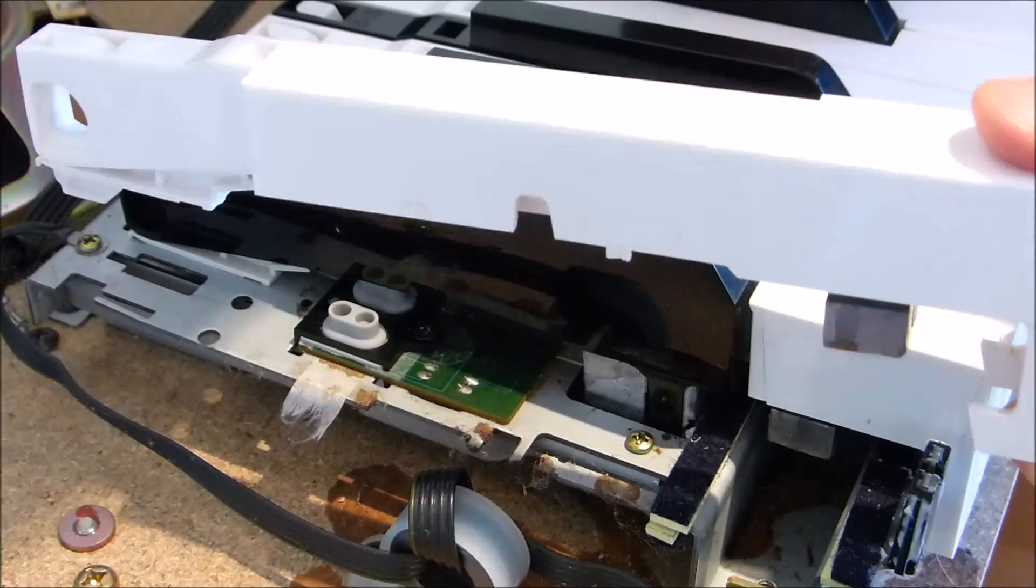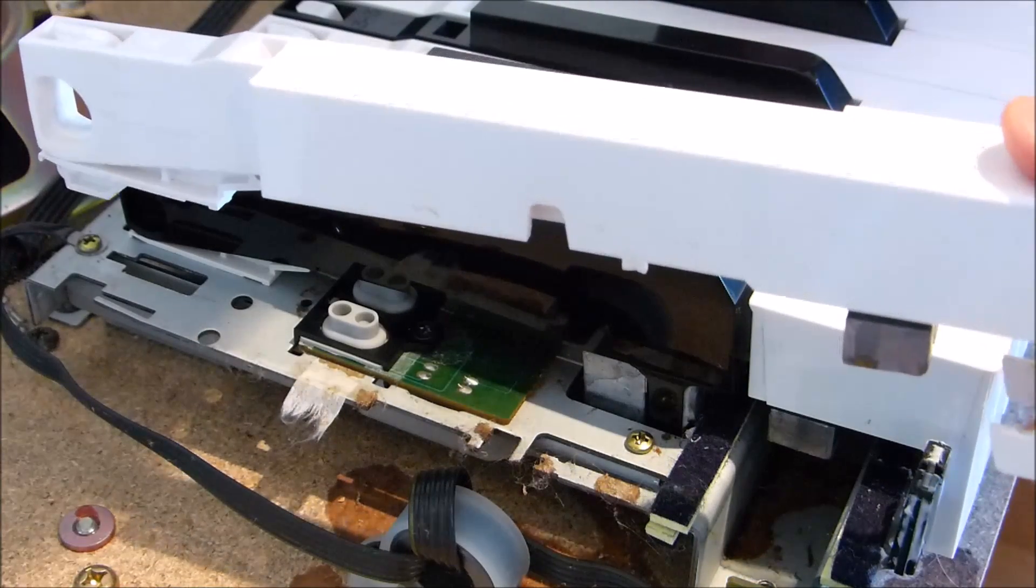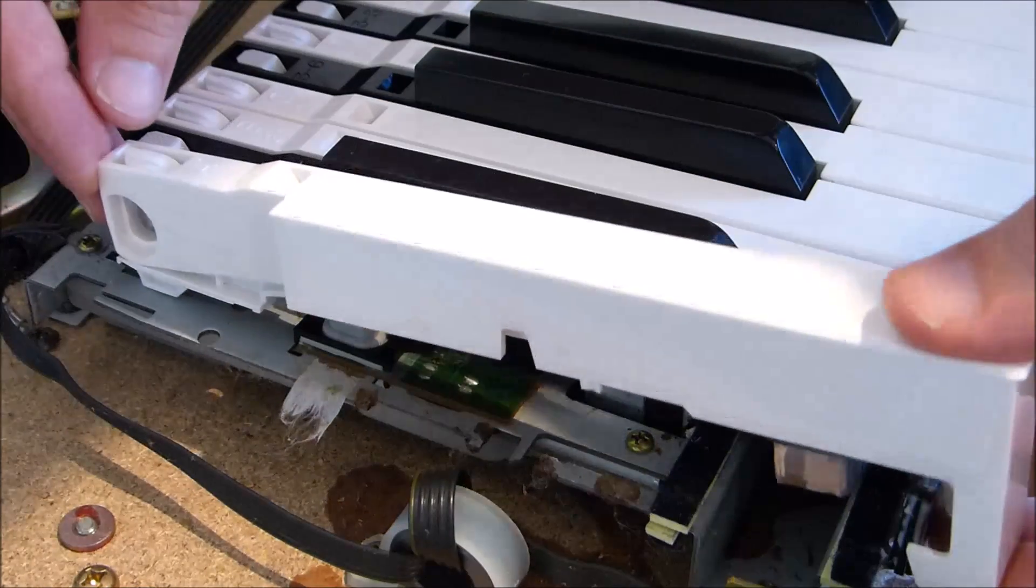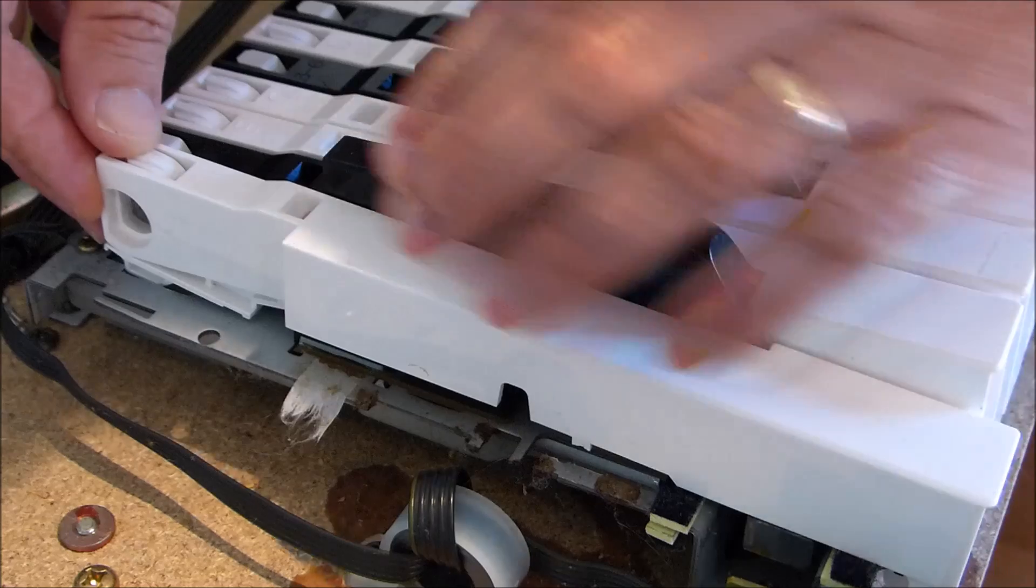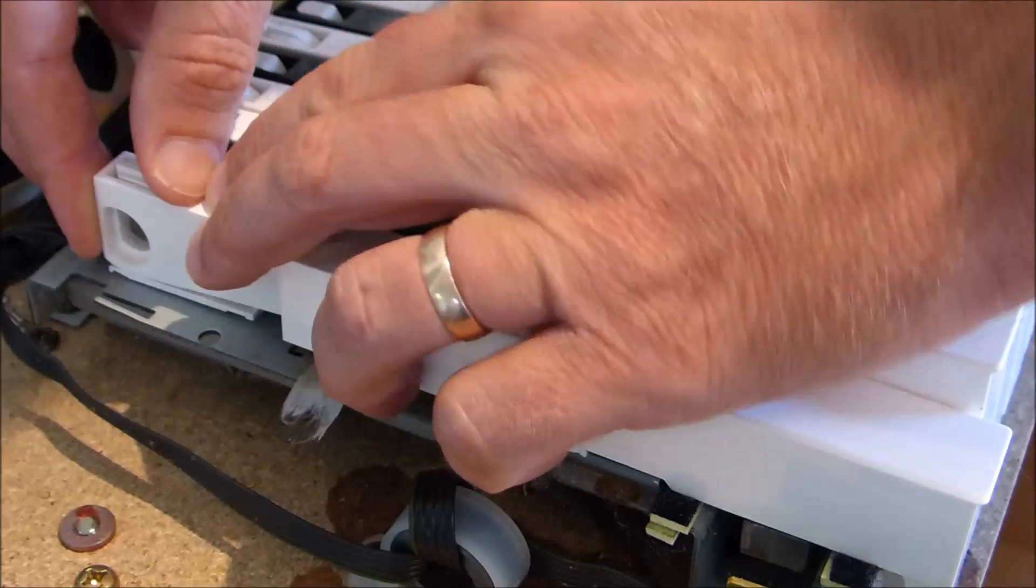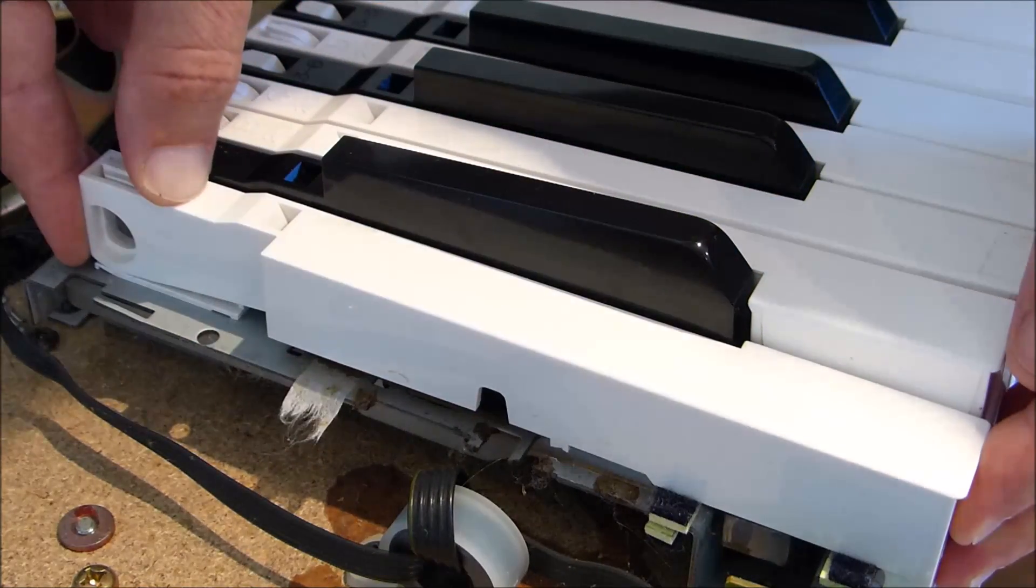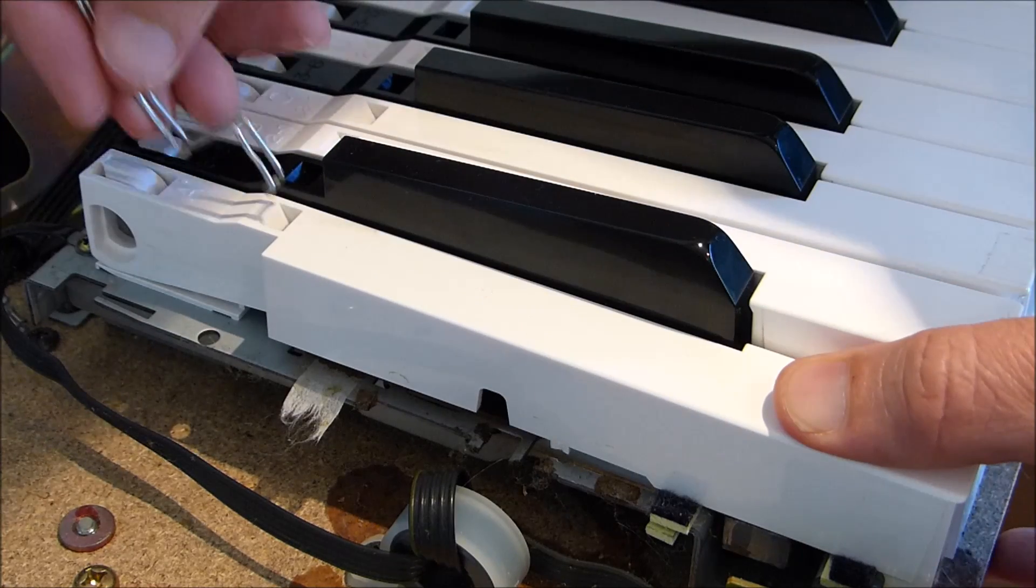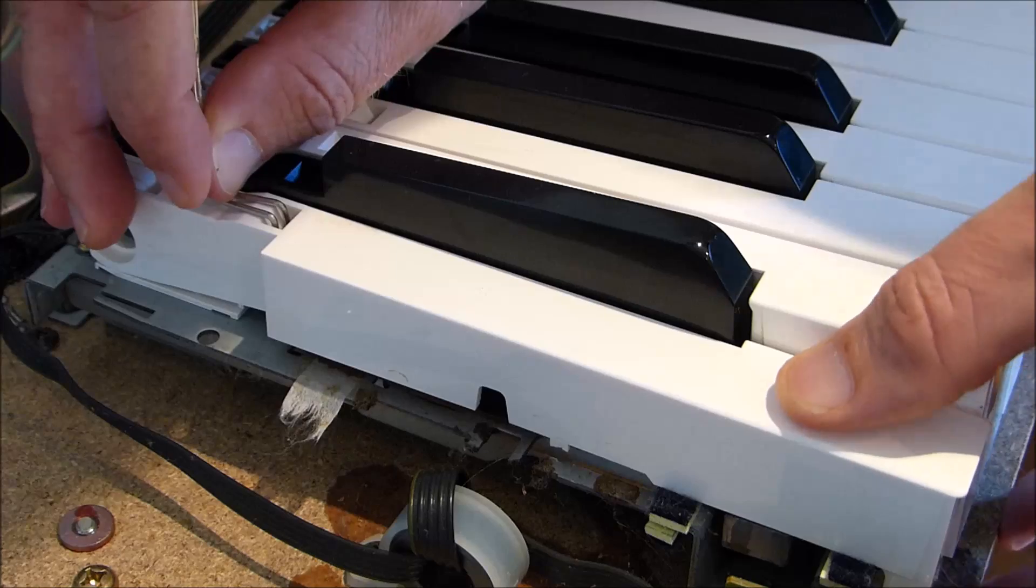And to put it back in again, you actually don't need the key at all. You can just slip it back in, push down on the key and then push back in towards the back of the keyboard. I'll just remove that one again because we're going to remove a black key as well.